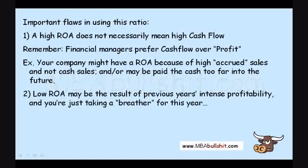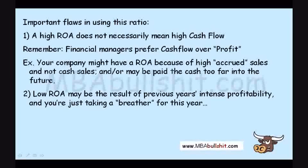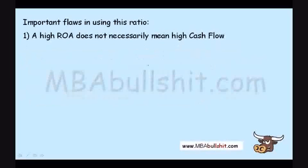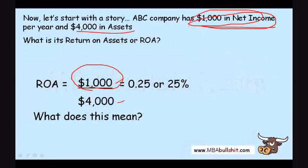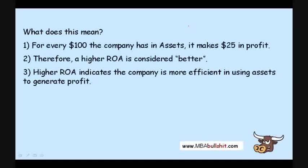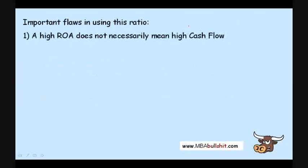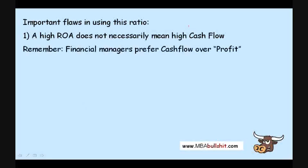It might be the result of growing quickly in the previous years, and then your ROA is low this year just because your most recent year's earnings are quite low as you're taking a breather. When you compute ROA, this $1,000 is actually the net income of the most recent completed year, not the current year, since the current year has not ended yet.